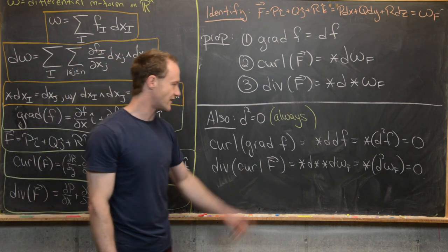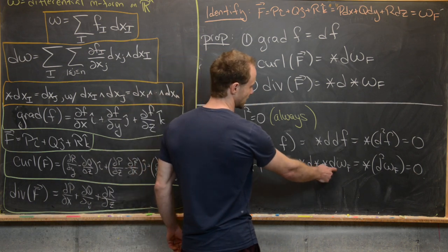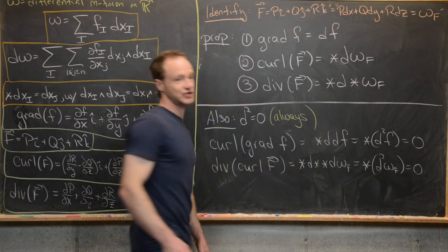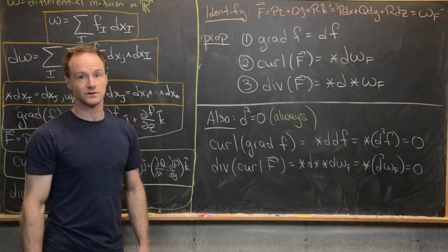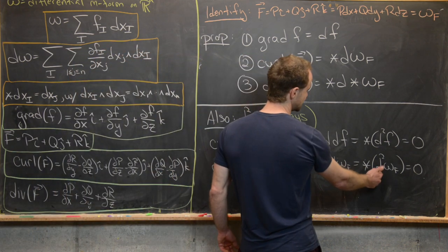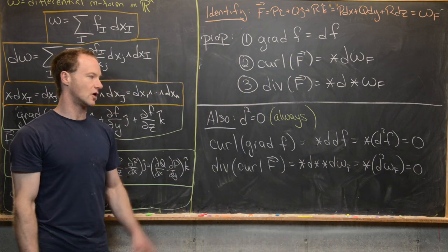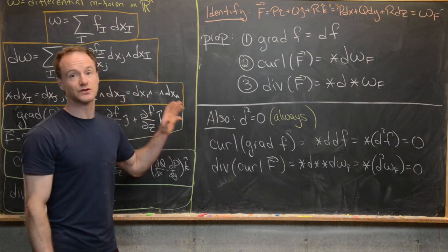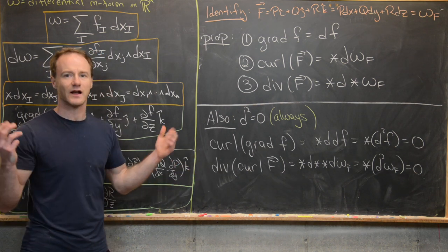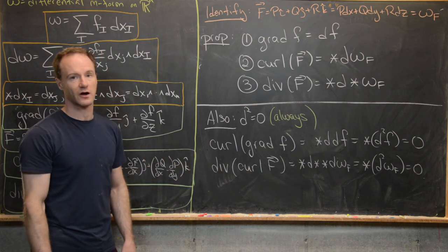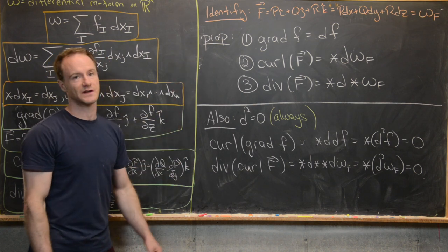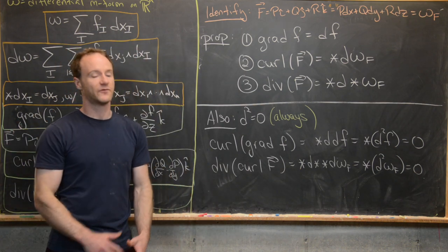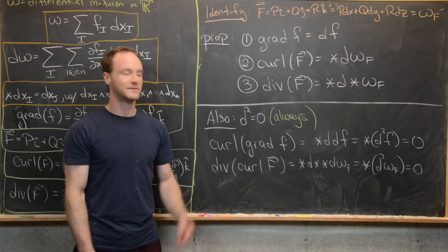Similarly, the divergence of the curl of F equals ★d★★d(ω_F). In three dimensions, ★★ gives back the identity, so this becomes ★(d²(ω_F)) = 0, since d² is always zero. This squaring to zero is really a generalization of these classic multivariable calculus identities, and the gradient, curl, and divergence are all very special cases of the exterior derivative from the theory of differential forms.